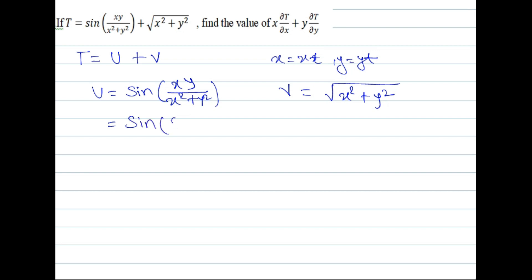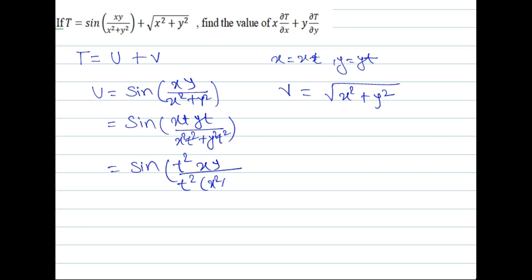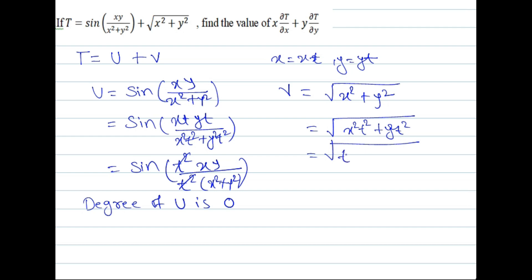So here we get sin(xt · yt / (x²t² + y²t²)). From the numerator t² and from the denominator t² are common, so t² cancels. Therefore the degree of u is 0 — u is a homogeneous function of degree 0. For v, we get √(x²t² + y²t²) = √(t²(x²+y²)) = t·√(x²+y²), so the degree of v is 1.